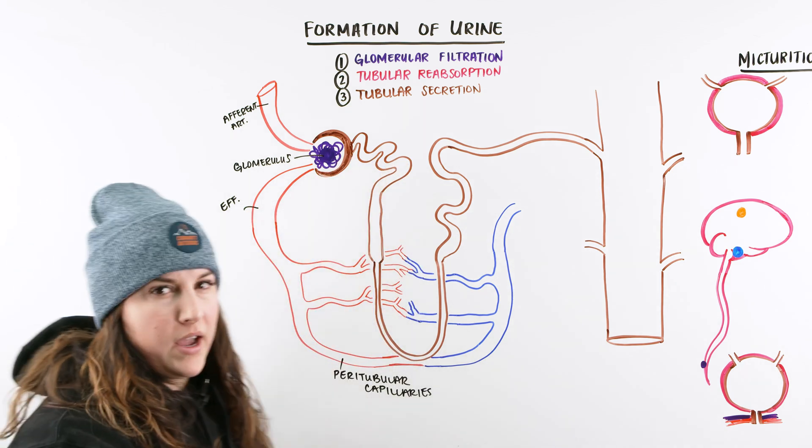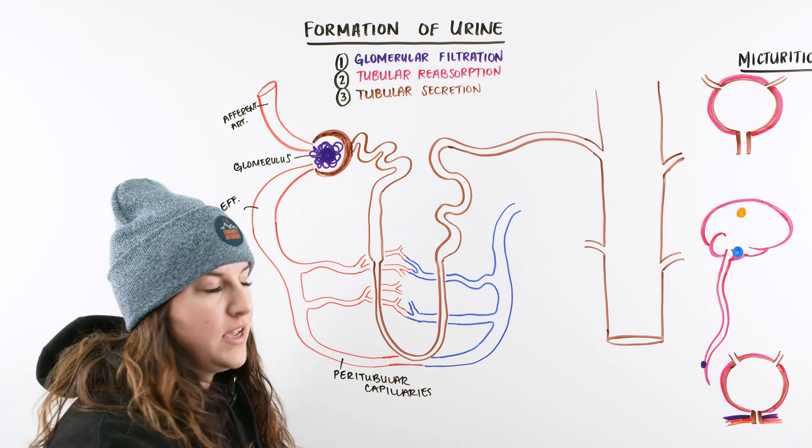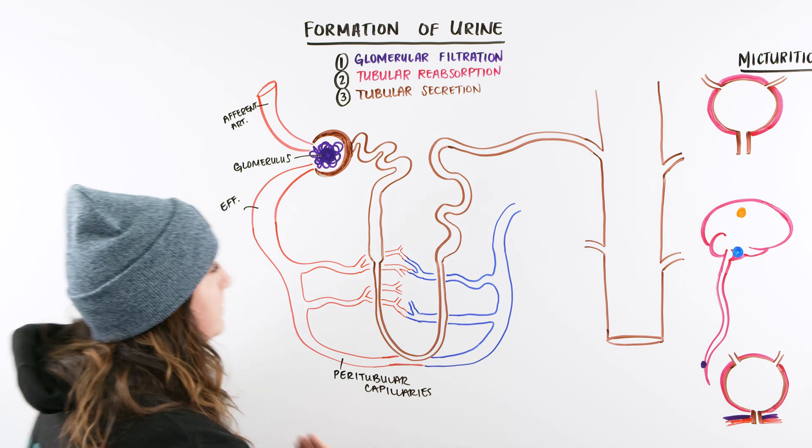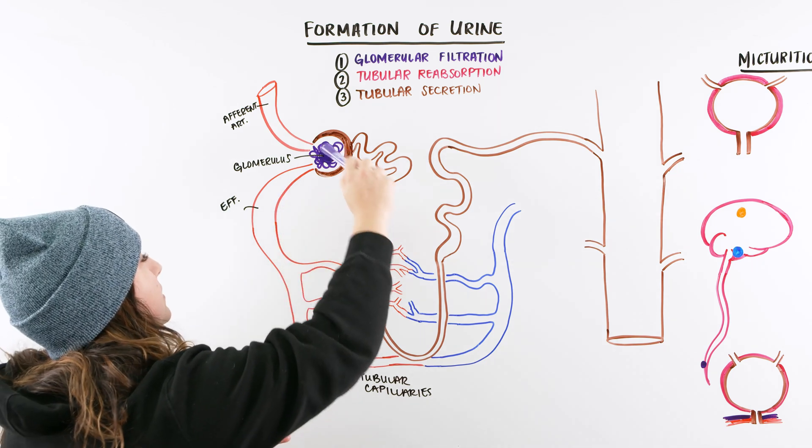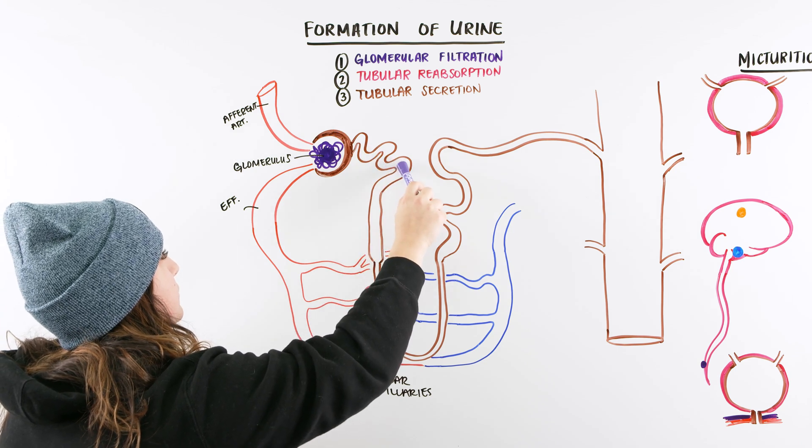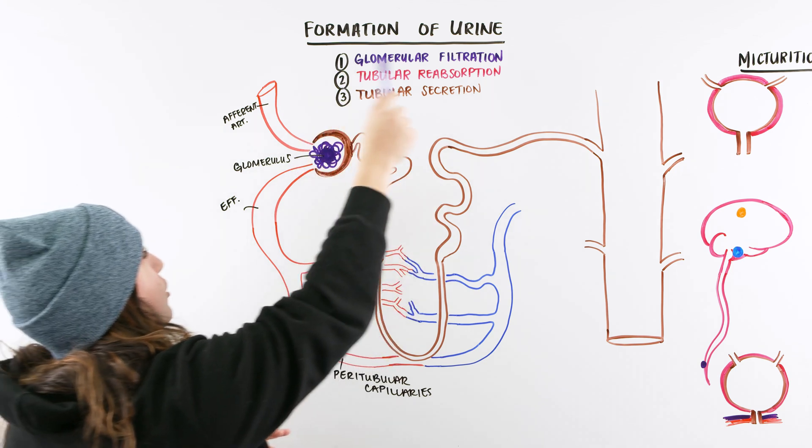So those are things like amino acids, creatinine, our water, our electrolytes, glucose. And as they get into our filtrate is when we have our glomerular filtration.